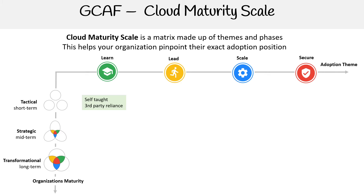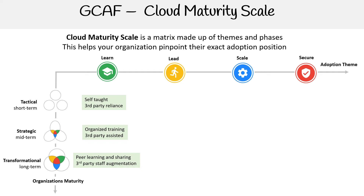Where it intersects with Learn and Tactical, the idea is that you are self-taught and reliant on third parties. For Strategic Learn, these are organized training with third-party assistance. For Learning Transformational, it's peer learning and sharing with third-party staff augmentation. These are kind of abbreviated so they don't make a whole lot of sense at first glance.